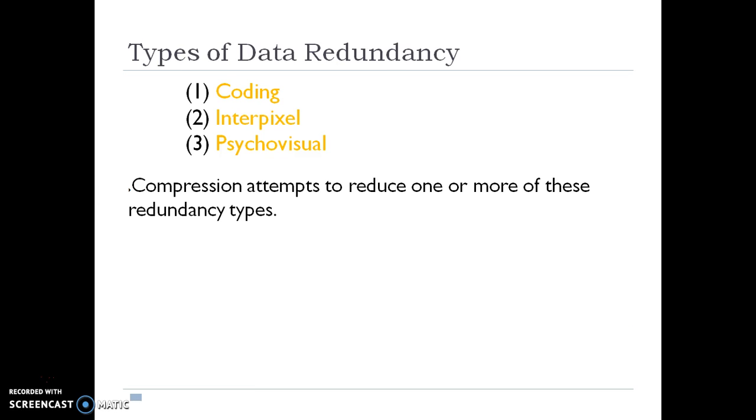There are different types of data redundancies. Data redundancy is classified into three categories: coding redundancy, interpixel redundancy, and psychovisual redundancy. Compression attempts to reduce one or more of these redundancy types.